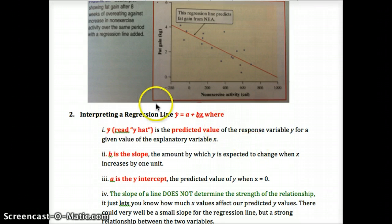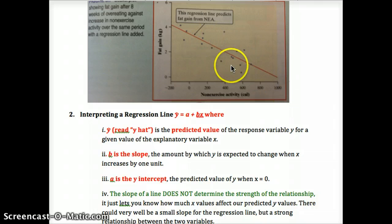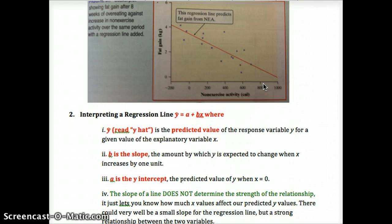Our prediction will be called y-hat — that's y with a little hat on top. It's the predicted value of the response variable y for any given value of the explanatory variable x. B will be our slope — that's the slope of our regression line. And A is the y-intercept, as we talked about in the previous class.